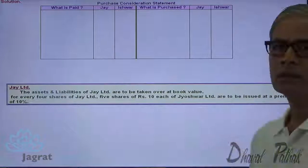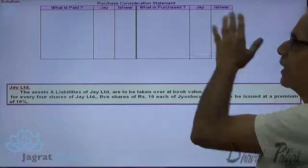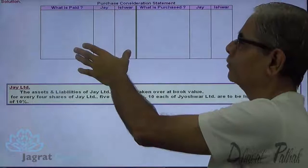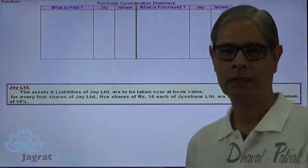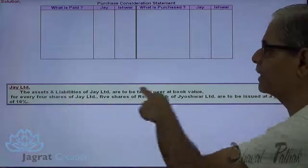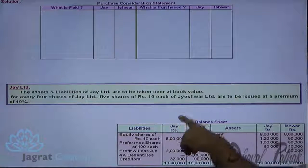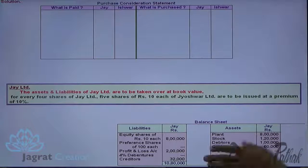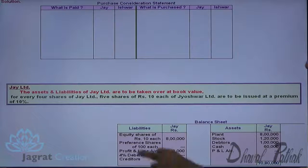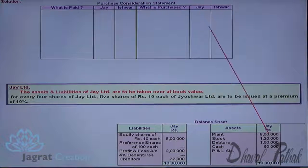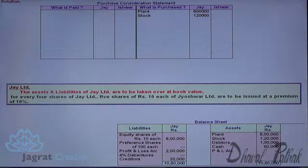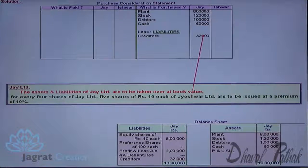As per my suggestion, here I am going to calculate the net assets under the title of 'what is purchased' and the total payment made under the title of 'what is paid.' For Jai Limited, assets and liabilities are to be taken at book value. So plant is taken for 8 lakhs, stock purchased for 1 lakh 20,000, debtors purchased for 1 lakh, cash balance taken as it is at 60,000, creditors purchased at 32,000. There are no debentures. So all the assets and liabilities are purchased.